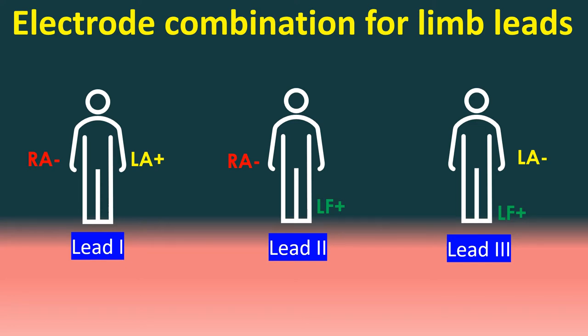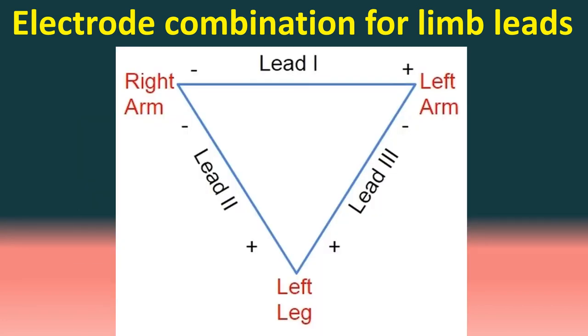Lead 1: left arm positive, right arm negative. Lead 2: right arm negative, left foot positive. Lead 3: left arm negative, left foot positive. A diagram illustrates the positive and negative poles of the three standard limb leads. Note that the right arm is negative for leads 1 and 2, and the left foot is positive for leads 2 and 3.